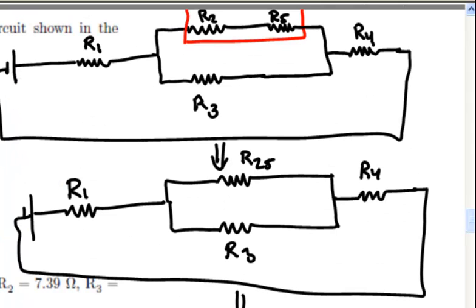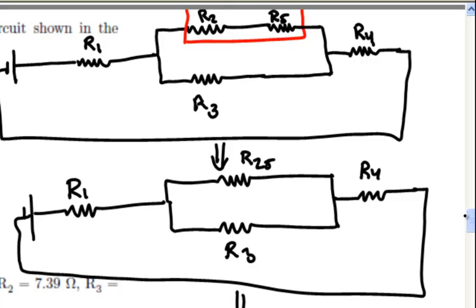The first step is to take R2 and combine it with R5. I'll write the numbers in here: R2 plus R5, we've got 7.39 plus 9.47, and that's 16.86. So we have an equivalent resistance of 16.86 ohms.